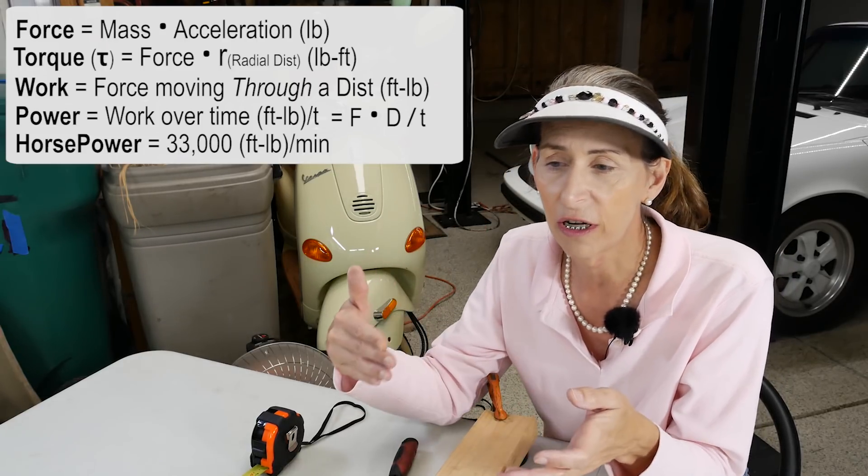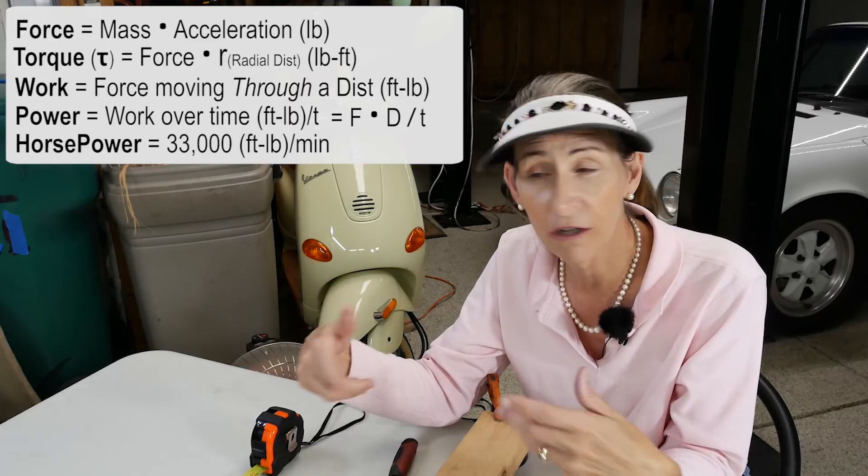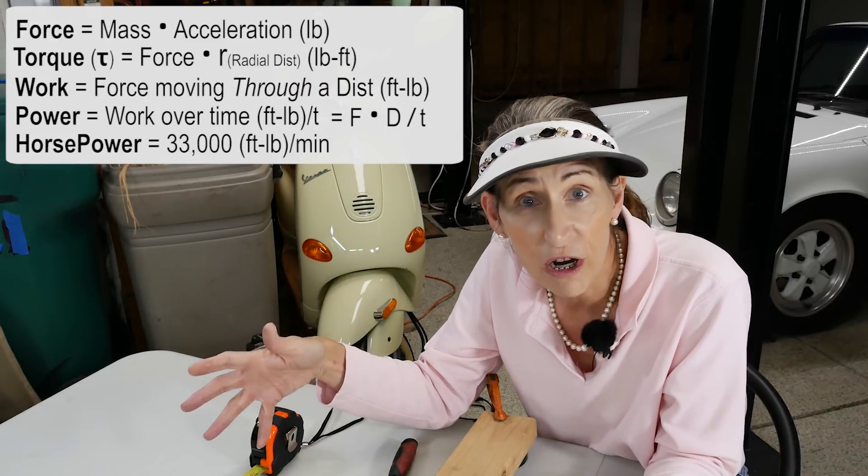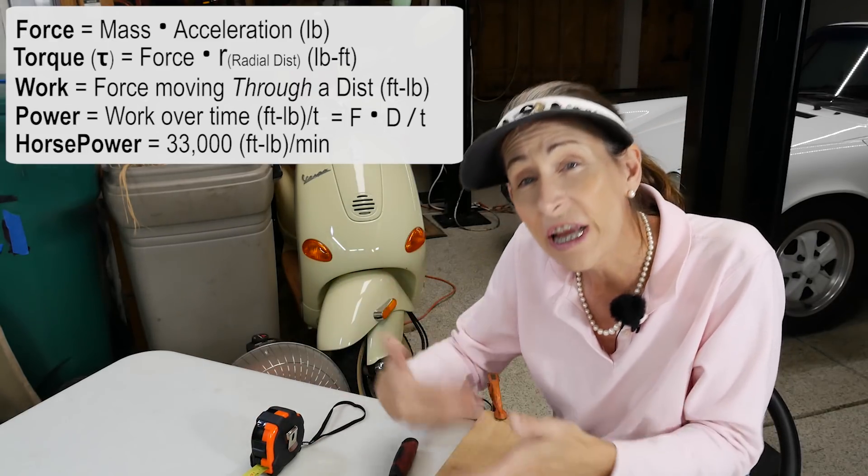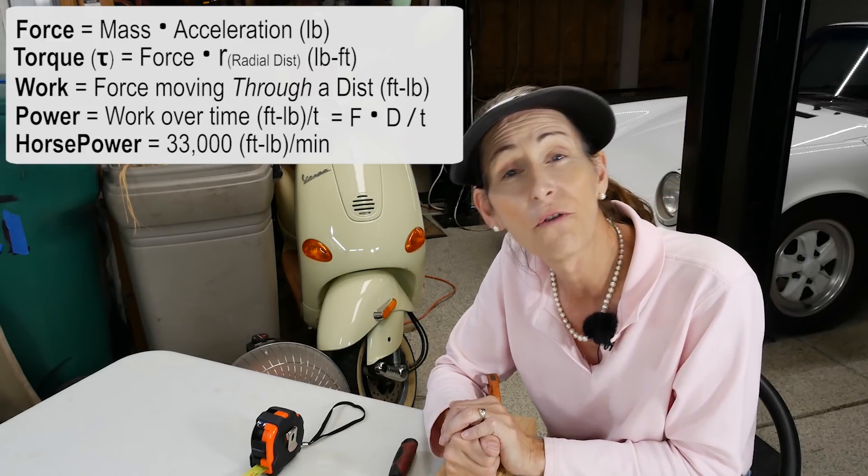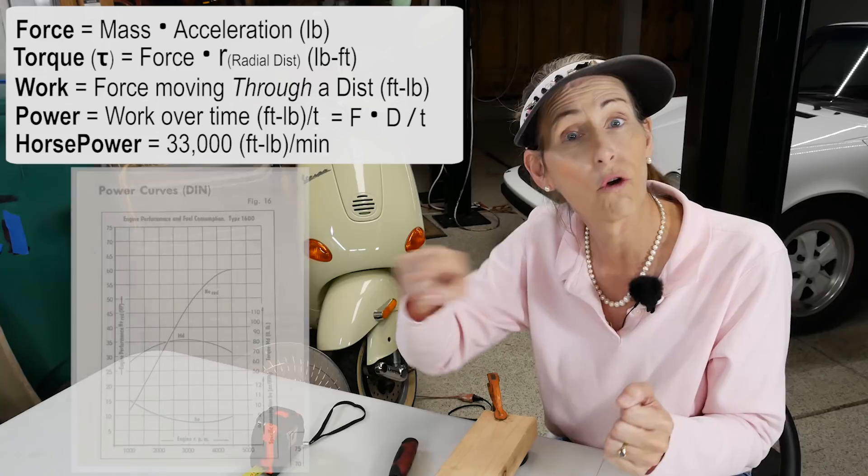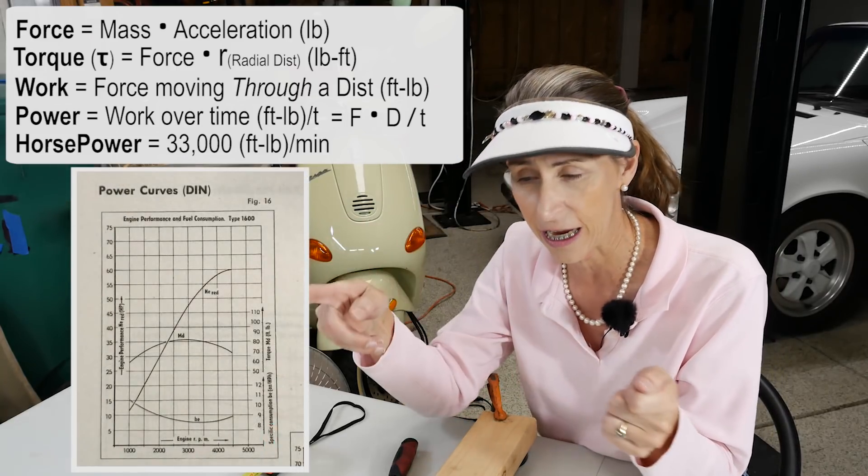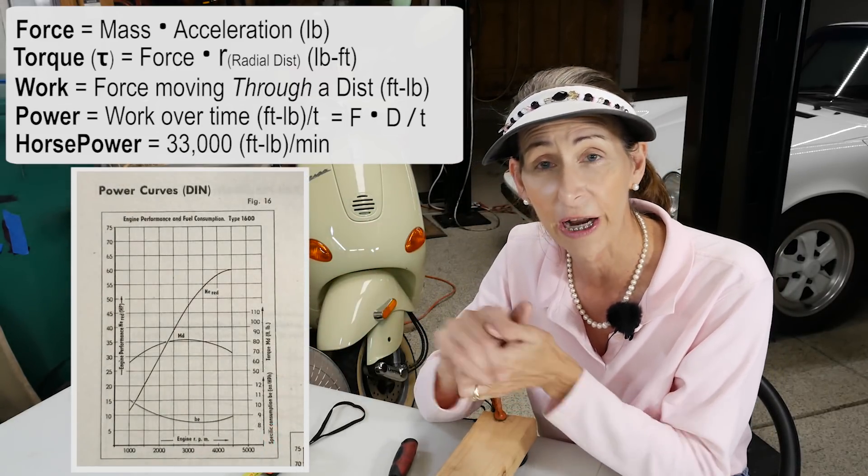So with a car you'd put it on a dynamometer or maybe a rolling road or something if you wanted to measure wheel horsepower. Or if you look in your owner's manual, I know for the 356 they have torque curves and RPM and horsepower curves, which is really great.